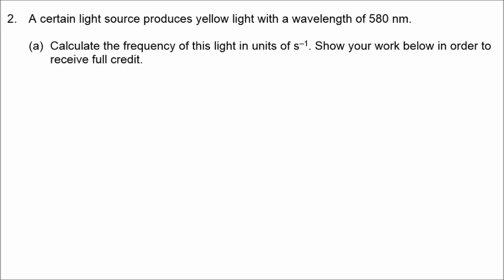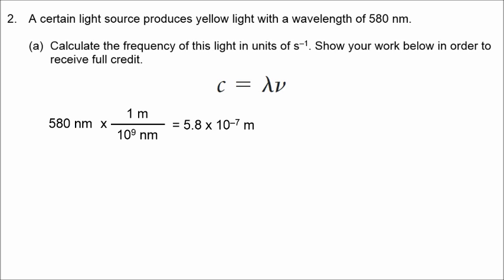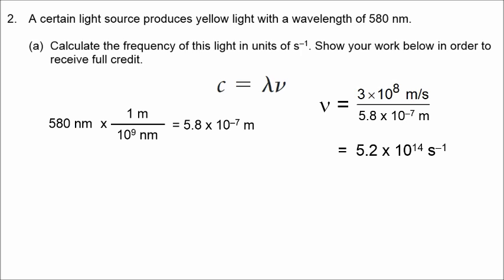Number 2 is a chapter 6 question. A light source produces yellow light with a wavelength of 580 nanometers. Converting to meters: 5.8 times 10 to the negative 7 meters. Using the equation relating wavelength and frequency (speed of light divided by wavelength), we get a frequency of 5.2 times 10 to the 14th hertz.